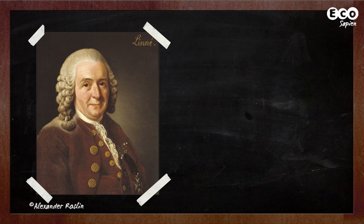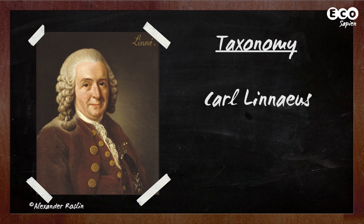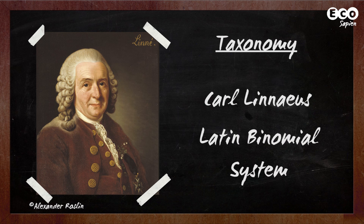We'll start with orders. An order is a level of ranking used in taxonomy. Taxonomy is the system of naming and classifying anything from cars to chocolate, but what we're interested in is biodiversity. The taxonomic system used today is based on one developed by Swedish naturalist Carl Linnaeus in 1753. It's called the Latin Binomial System because every species is given two Latin or Latinised names.